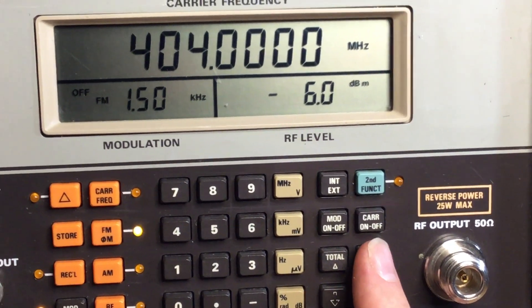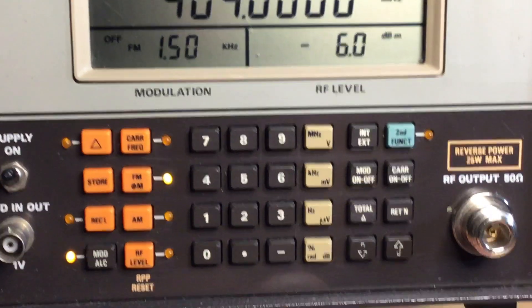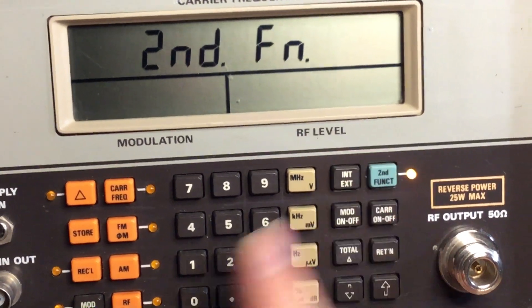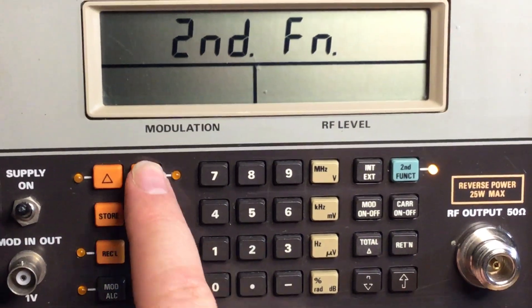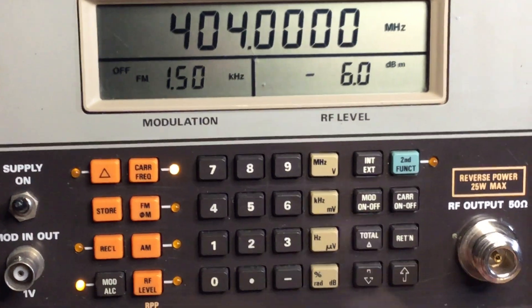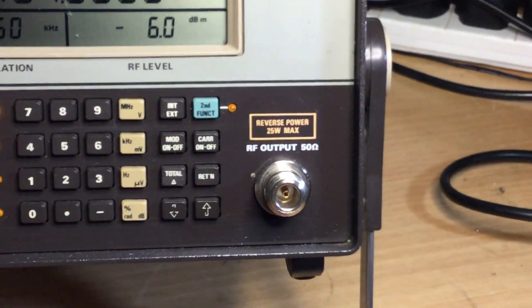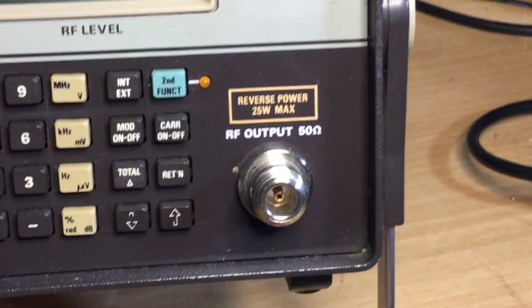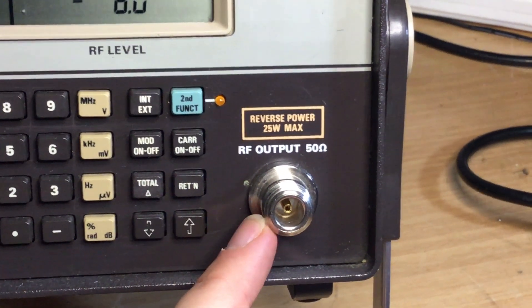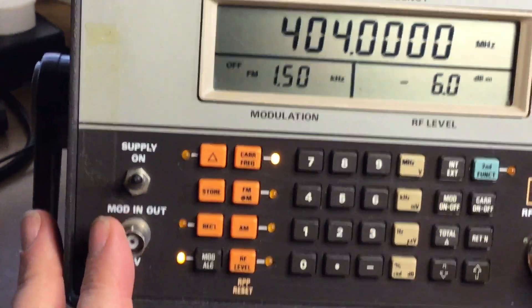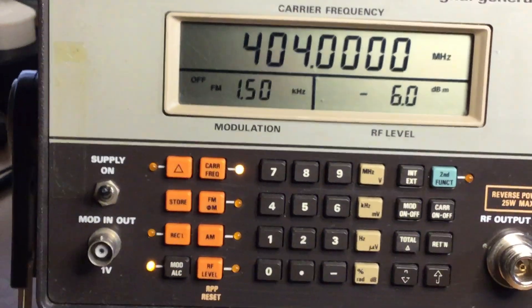There's quite a few functions on it. There's even more functions with the second function key there, where you can press to get second functions, so there's more to it as well that you can set up, which is in the manual for the test set. Again, an N-type 50 ohm output. You can give reverse power of 25 watts if you were to accidentally transmit back into the instrument. And then of course we've got the power supply switch here as well.